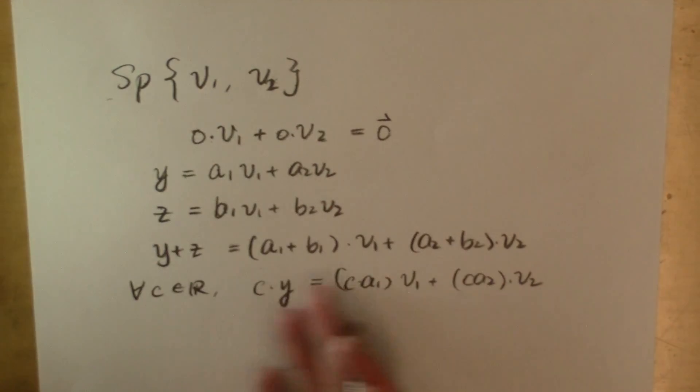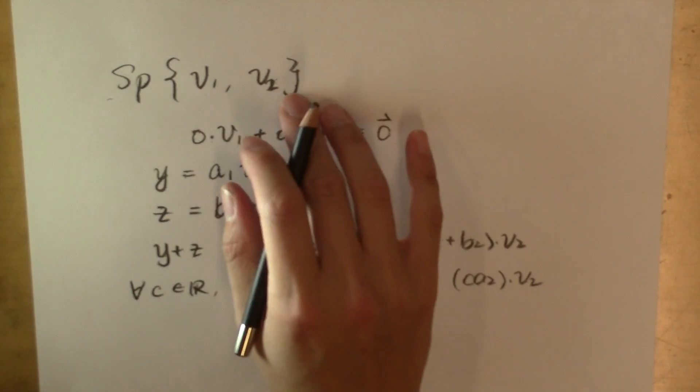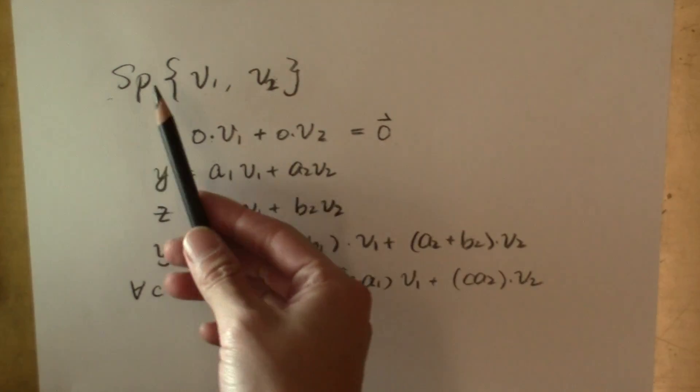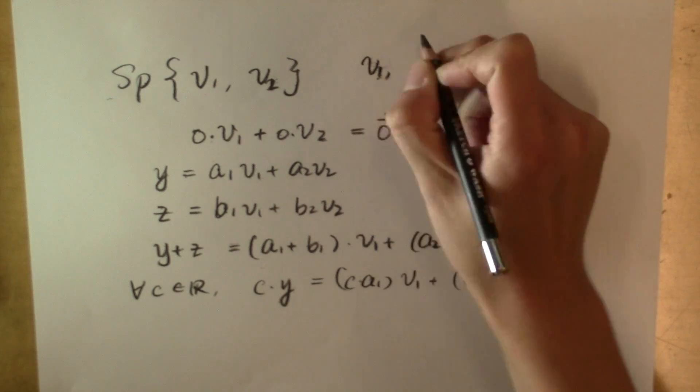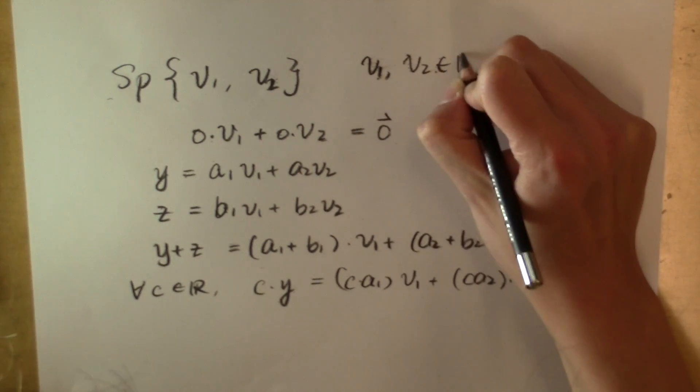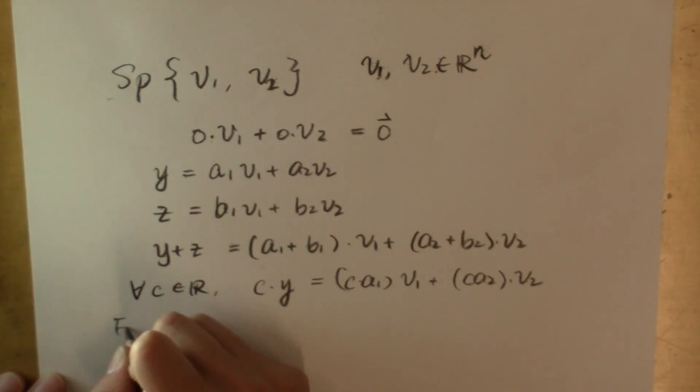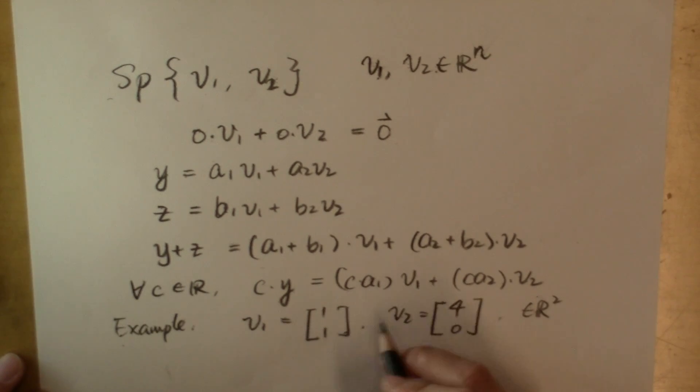Already I know a lot of vectors that need to belong in this set of infinitely many vectors. What kind of vectors does it not contain? If v sub 1 and v sub 2 are both in the n-dimensional euclidean space, for example, if v sub 1 is [1,1], v sub 2 is [4,0], they're both two-dimensional vectors in the two-dimensional plane, can the vector [1,1,